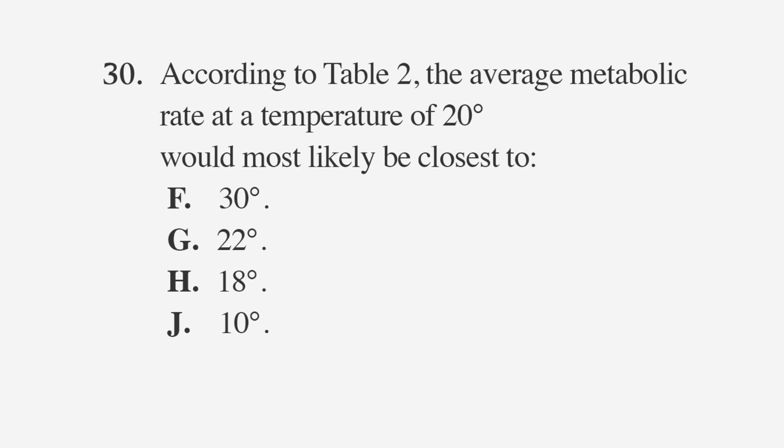Let's try an interpolation problem. According to Table 2, the average metabolic rate at a temperature of 20 degrees would most likely be closest to: F. 30 degrees, G. 22 degrees, H. 18 degrees, or J. 10 degrees.